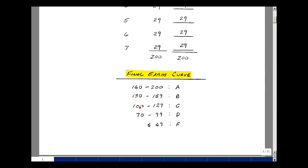160 to 200 points is the A range, 130 to 159 B, 100 to 129 C, 70 to 99 D, and less than or equal to 69 is F.